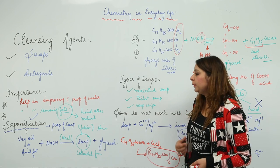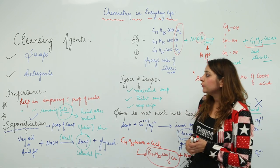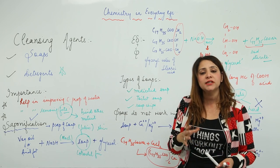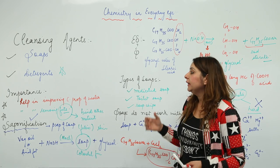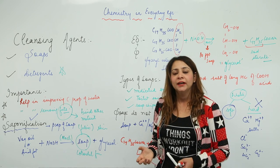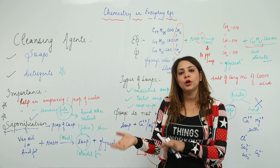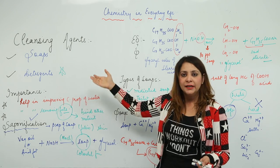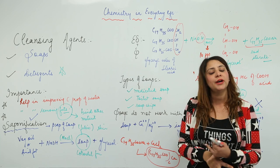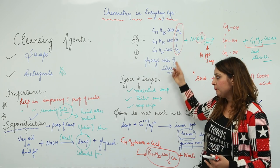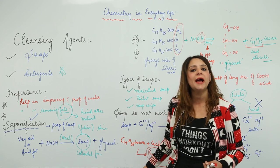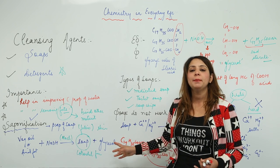This covers all about soap. Next, we will discuss detergents — what detergents are, the differences between soaps and detergents, and which is a better cleansing agent, along with the advantages and limitations of each. If you get a question on soap, write the definition, saponification with an example, the types of soaps, and the major drawback — that it cannot be used with hard water — along with the suitable chemical reaction.